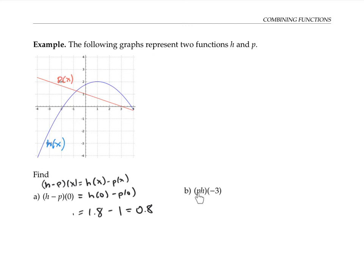If we want to find p times h of negative three, again, we can rewrite that as p of negative three times h of negative three. And using the graphs, we see that for an x value of negative three, the y value for p is two. And the x value of negative three corresponds to a y value of negative two for h. Two times negative two is negative four. So that's our value for p times h of negative three.